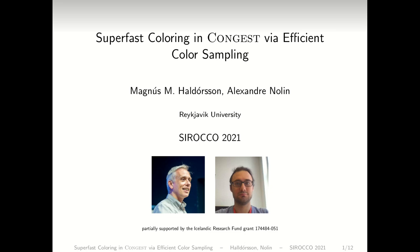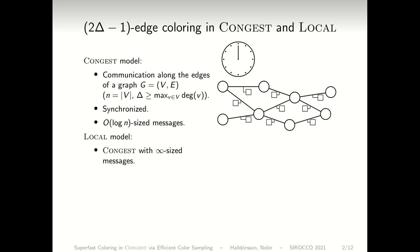First, a bit of definition. The setting we are in is the CONGEST model. In this model, communication happens along the edges of a graph, and the computing engines are nodes of said graph. There are at most n nodes, and the degree is bounded by a commonly known constant delta. Communication is synchronised, that is, time goes by in rounds, and in each round, each node can send a message to each of its neighbours, and the messages are of size at most log n, where n is the number of nodes in the graph.